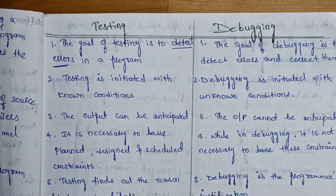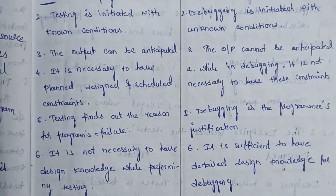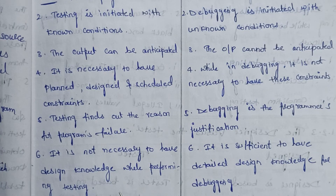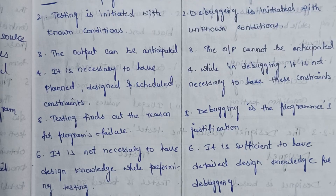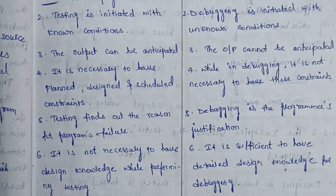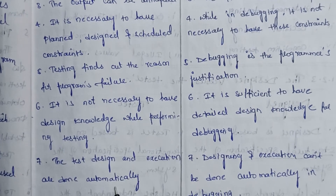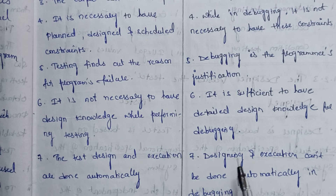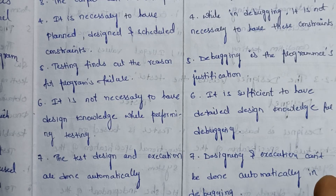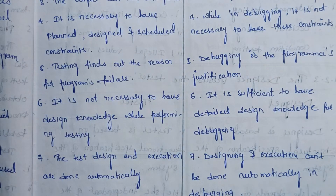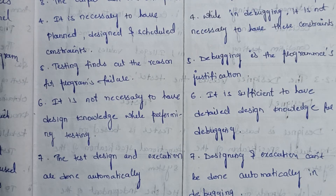In debugging, justification for the program's failure is not necessary to find. It is not necessary to have design knowledge while performing testing - when testing, detailed design knowledge is not required. But for debugging, sufficient detailed design knowledge is needed. Test design and execution are done automatically, whereas in debugging, design and execution cannot be done automatically. These are the seven differences for testing and debugging.